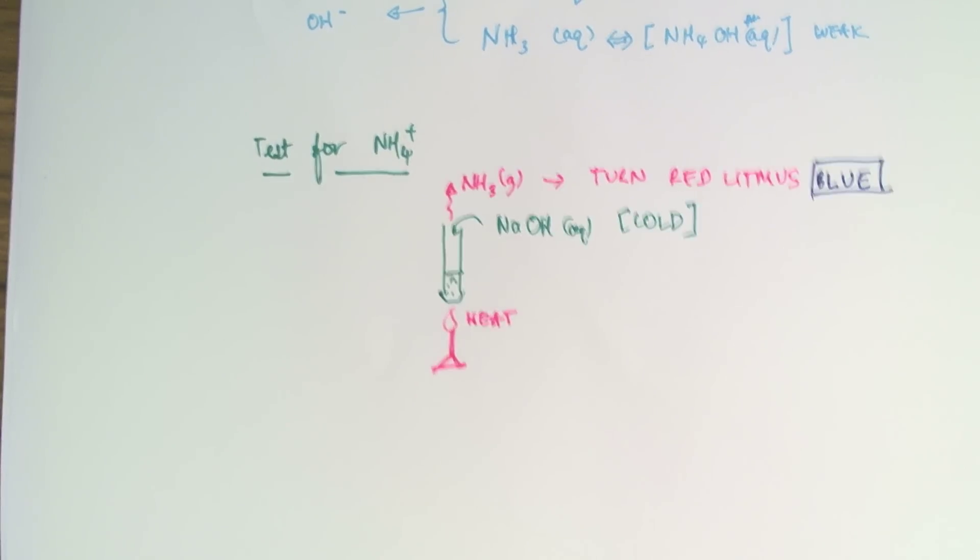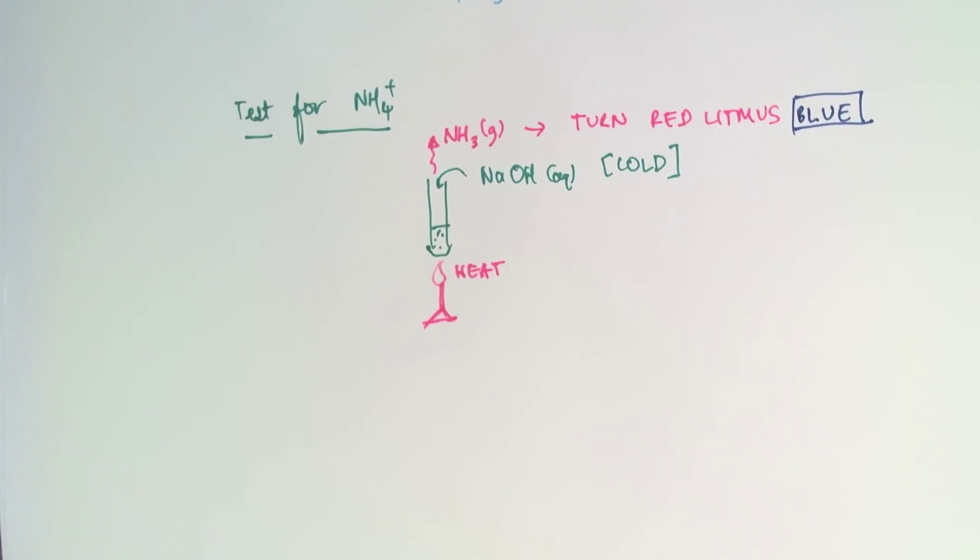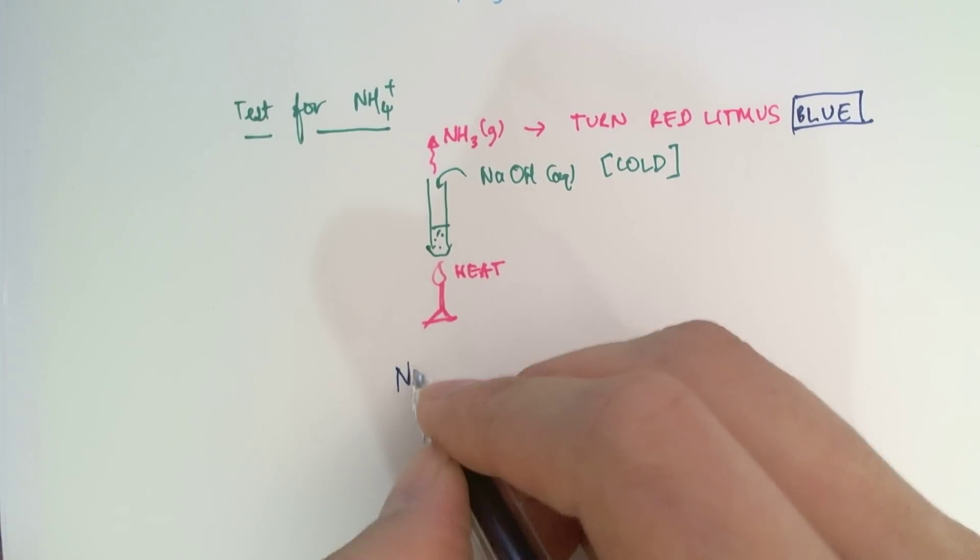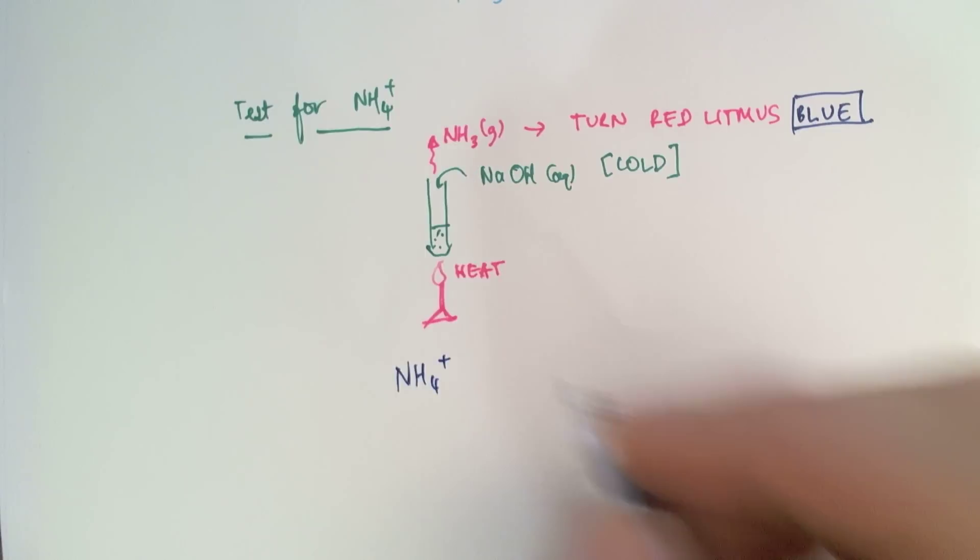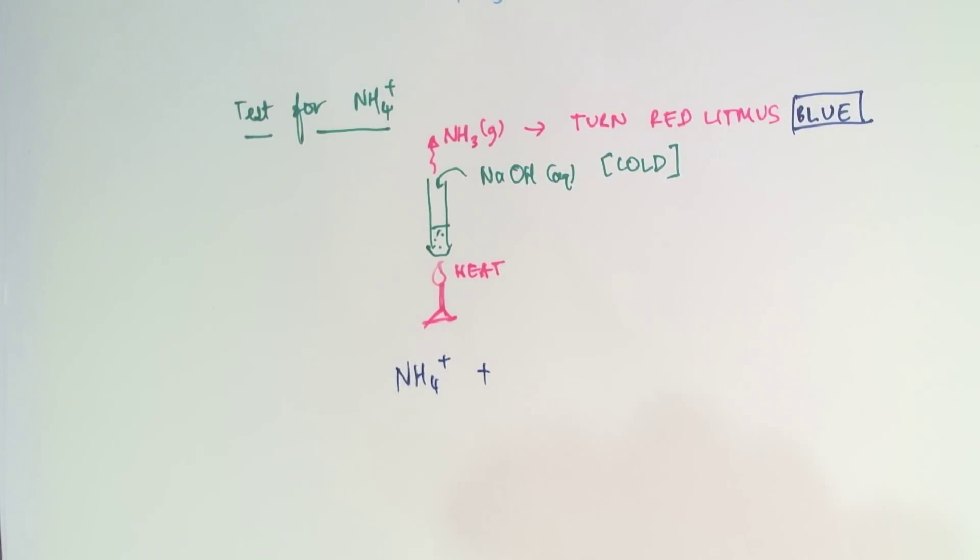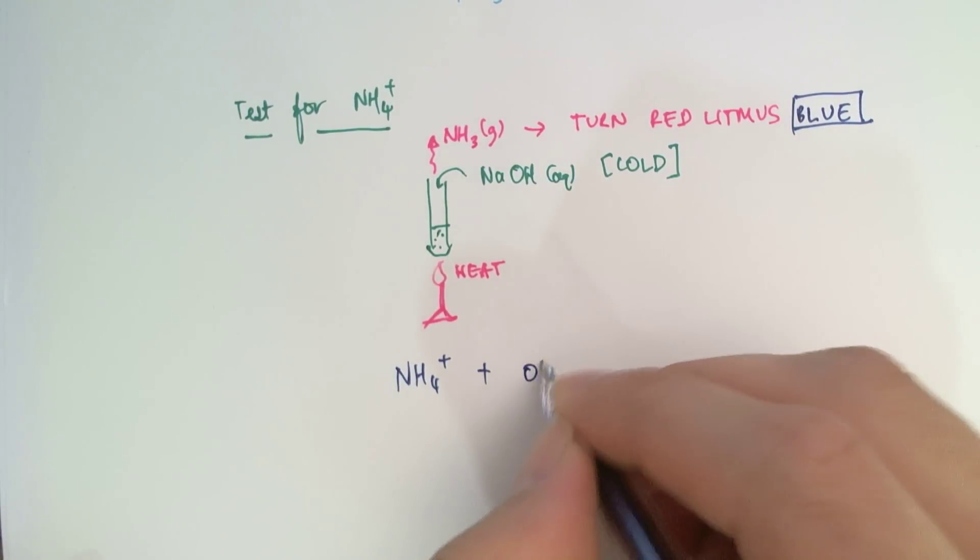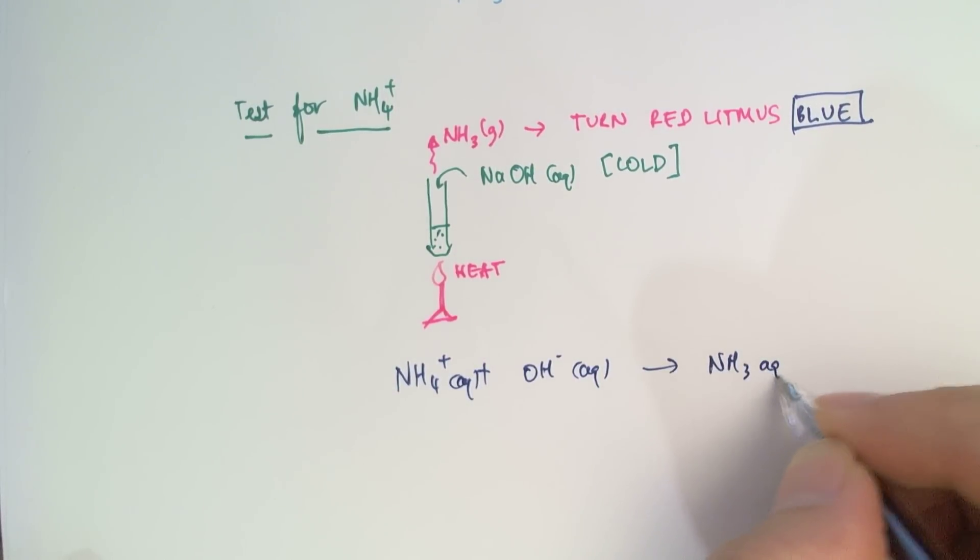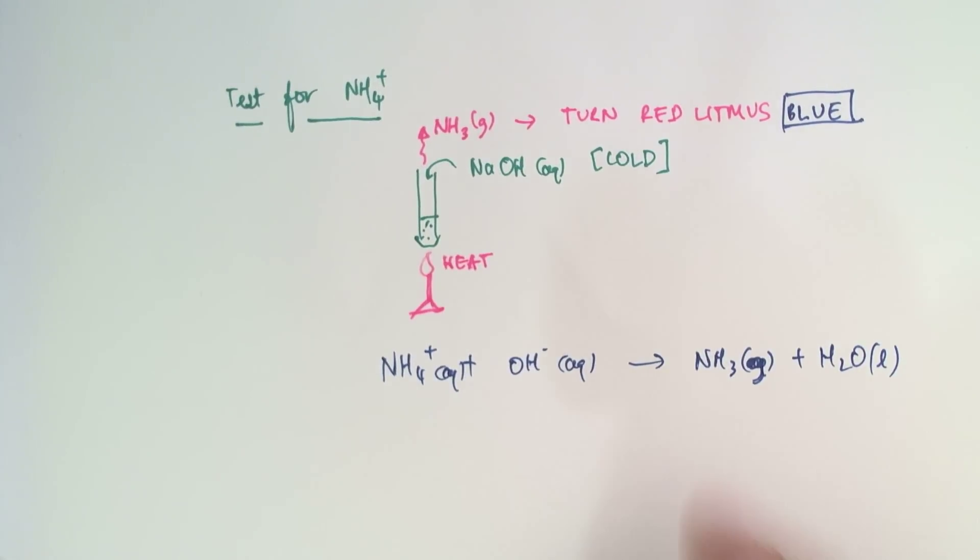So that's how you test for ammonium. You just add some sodium hydroxide, and if the gas released turns litmus blue, you know that ammonium ion is present. And the equation for this is ammonium will react with the hydroxide aqueous to form ammonia gas and also some liquid water. So it is this ammonia gas that turns litmus blue, and that's how you test for ammonium.